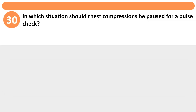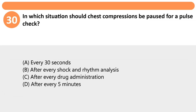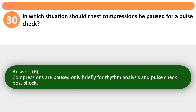In which situation should chest compressions be paused for a pulse check? A. Every 30 seconds. B. After every shock and rhythm analysis. C. After every drug administration. D. After every 5 minutes. Answer: B. Compressions are paused only briefly for rhythm analysis and pulse check post-shock.